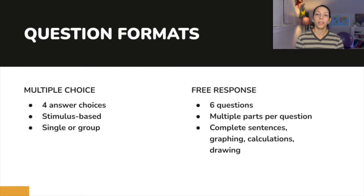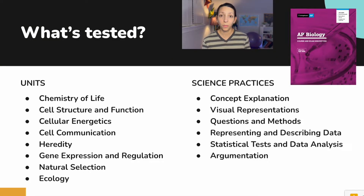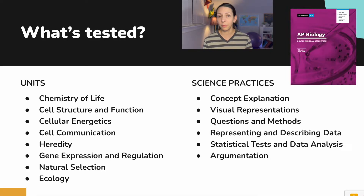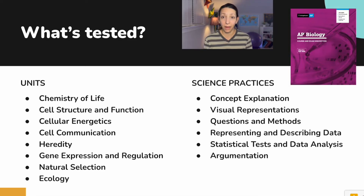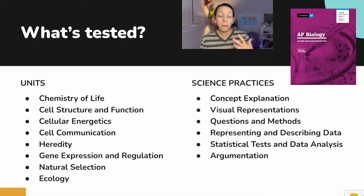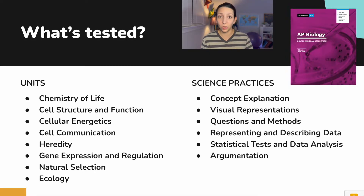The content you should be learning is written out in the Course and Exam Description, which I'll link in the description. This is a great place to check whether what you're studying will actually show up on the real AP Bio exam. For example, if you want to know whether plant hormones are tested, you can open the document and Control+F 'plant hormone.' Memorizing plant hormones is not part of the AP Biology exam — they may appear as an example, but most of what you're asked to do is apply new information in contexts familiar to you.